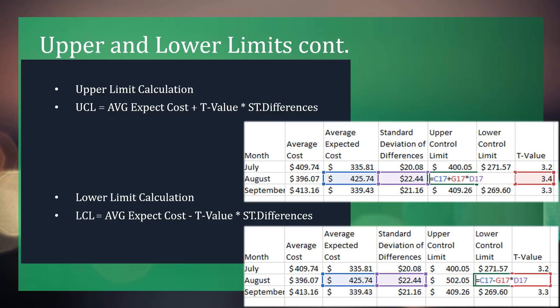Control limits are used to detect data out of bounds, using standard deviation as parameters and determining whether a process is not in control and not operating within expectations. To calculate the upper limit within Excel, you select the average expected cost plus the T value times standard deviation of differences. To calculate the lower limit, it's the same except that you are subtracting the T value.